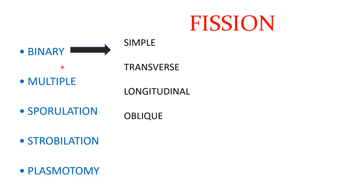In binary fission, the parent organism divides into two — 'bi' means two — so it divides into two halves and each half forms a daughter individual. The nucleus first divides, which is called karyokinesis, mitotically, and then it is followed by the division of the cytoplasm, cytokinesis. Based on the plane of division, we can see four types of binary fission.